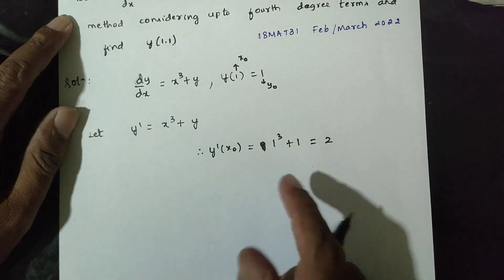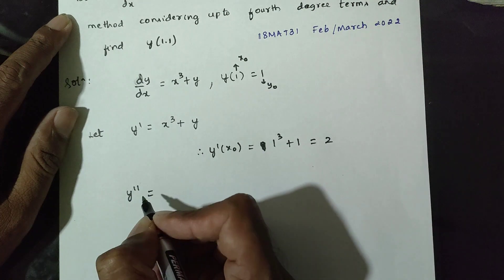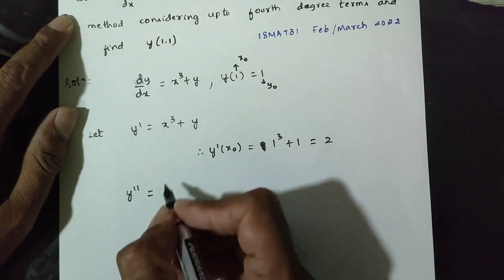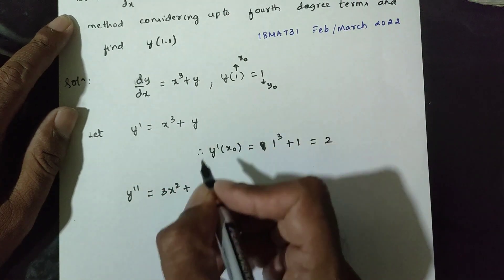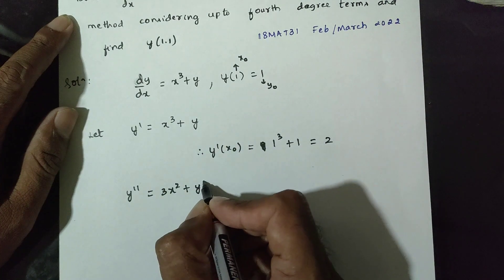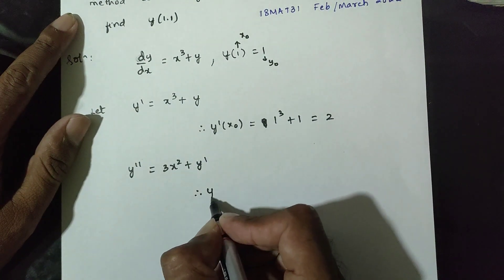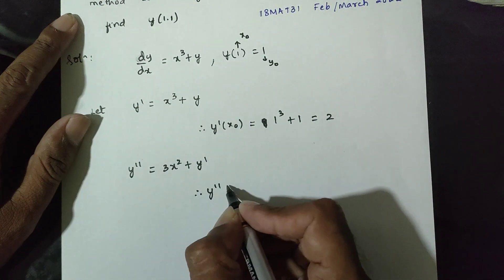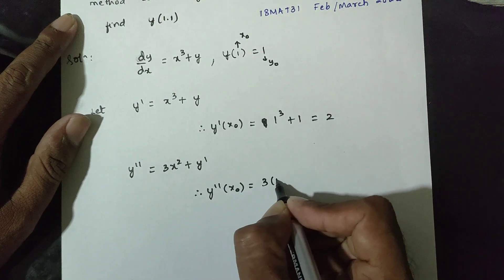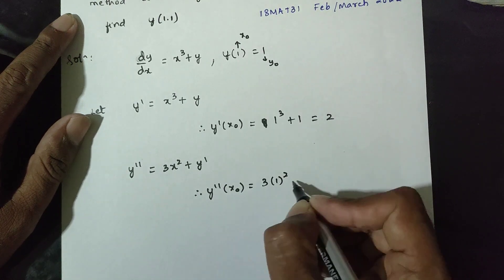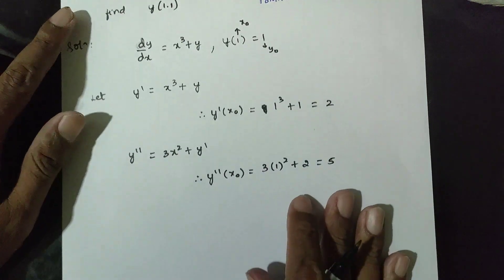Differentiating y-dash gives y double-dash. The differentiation of x³ is 3x², and y differentiates to y-dash. Therefore y double-dash of x₀ equals 3 into 1 squared plus 2, which is 3 plus 2 equals 5.